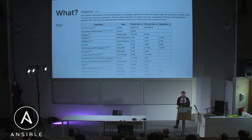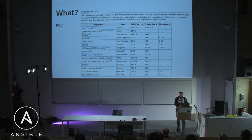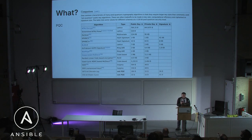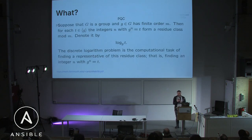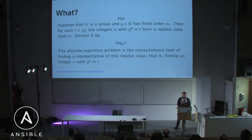So what is post-quantum crypto? Basically, larger key sizes with trade-offs in key size, computational efficiency, ciphertext, or signature size. Quantum crypto isn't really that much different from regular crypto — it's just a little more complex. Isn't that how computers work?